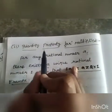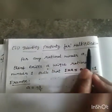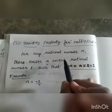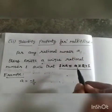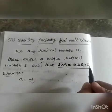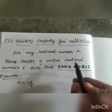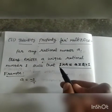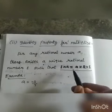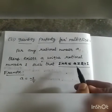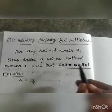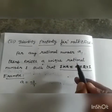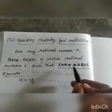Now we see the identity property for multiplication. For any rational number A, there exists a unique rational number 1, such that 1 × A = A = A × 1. So we take any rational number A, multiply by 1, and we get A only. The order changes — here 1 × A, here A × 1 — but we get the rational number A only.